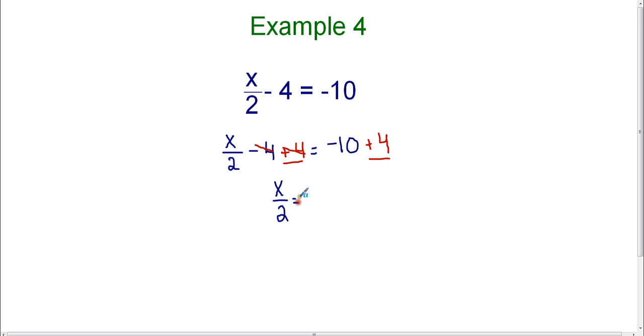And on the right-hand side, I now have negative ten plus four, which I can simplify to negative six. So now I'm down to a one-step equation. And this reads x divided by two equals negative six.